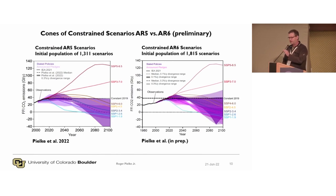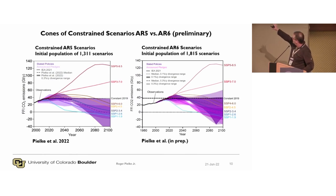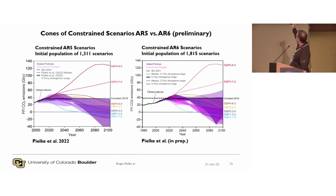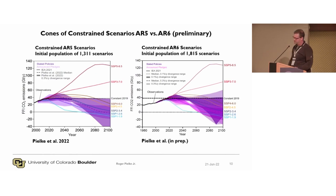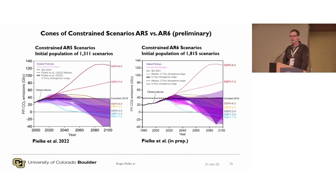Here are the results from AR5 on the left. The purple shading shows where the screen winds up for 2100 — the highest is constant 2019 emissions, and the median scenario there gets to net zero around 2100. On the right is the same analysis for AR6, and it's qualitatively and substantially the same. The median scenario gets to net zero about 2100, and the upper boundary is about constant 2019. You can see the 7.0 and 8.5 lines above that, well outside the cone.